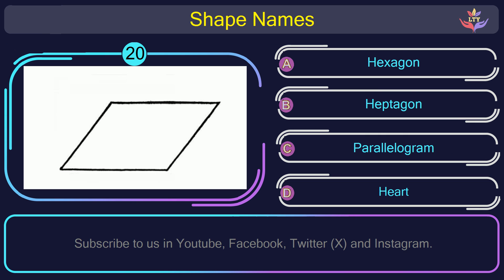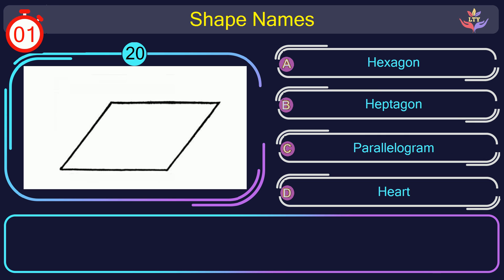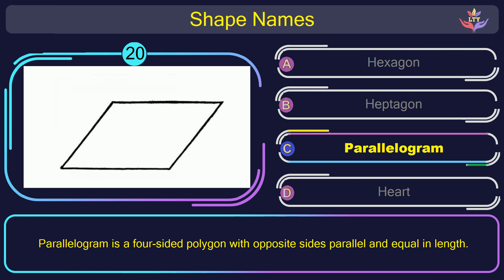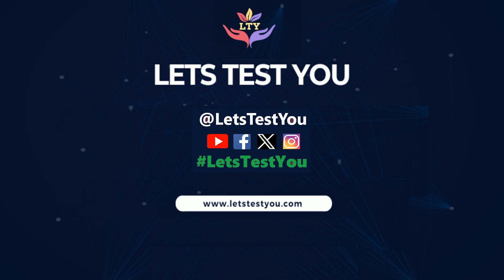Question number 20. Guess the name of the shape in this picture. The correct answer is option C. Parallelogram. Parallelogram is a four-sided polygon with opposite sides parallel and equal in length.